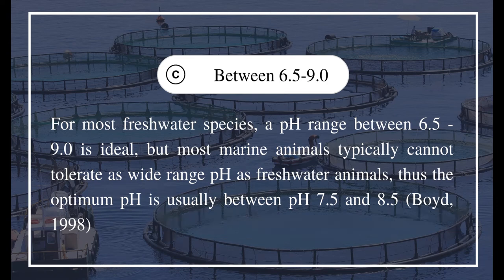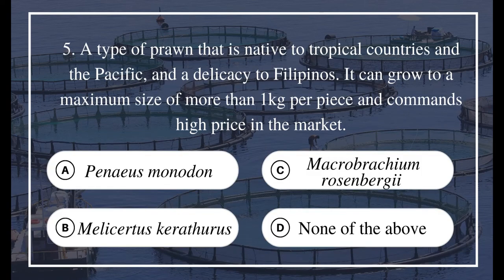According to Boyd 1998, for most freshwater species a pH range between 6.5 to 9.0 is ideal. However, most marine animals typically cannot tolerate as wide a pH range as freshwater animals; thus the optimum pH for marine animals is usually between 7.5 and 8.5.